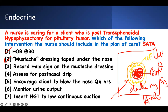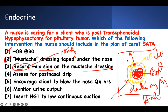Recording the yellow sign on the mustache dressing is not enough — you notify the provider. If we see it, it is abnormal. We don't want to see the yellow sign; we only want to see blood. When we see yellow around it, we know CSF is leaking. Notifying the provider is the priority — just recording is not enough.